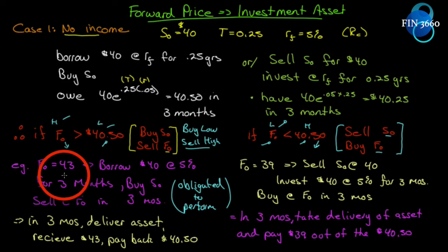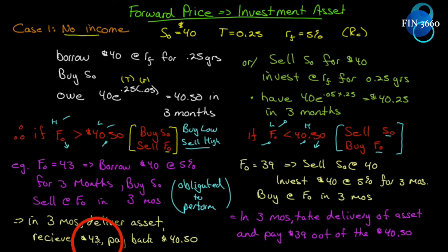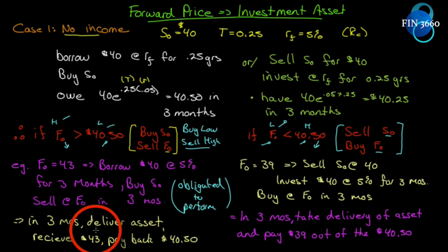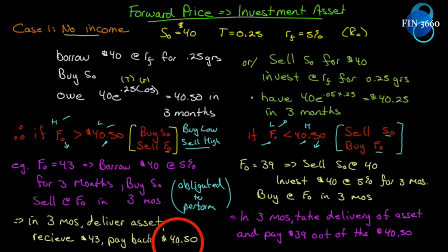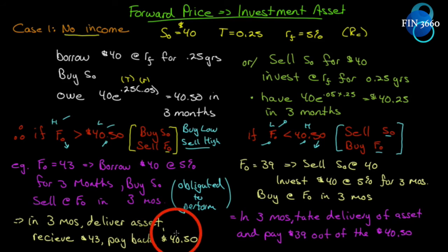Once you enter the contract at $43, you are obligated to deliver at $43; somebody else is obligated to pay $43. You bought it at $40 with borrowed money, and your loan grows to $40.50. You deliver the asset for $43 — there's your riskless profit. You borrowed somebody else's money, paid them back, and entered a contract forcing someone to buy it from you for more than your cost to carry the loan for three months. This introduces the term 'cost of carry.'